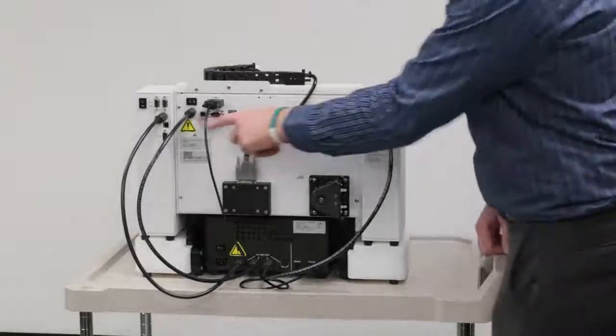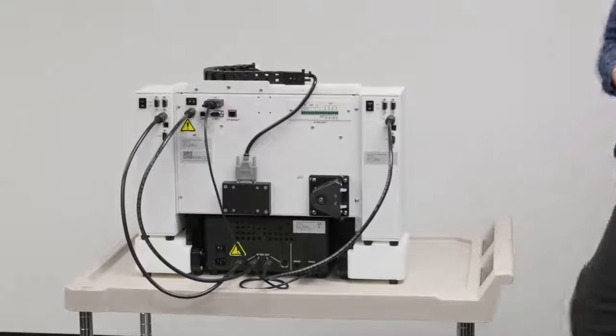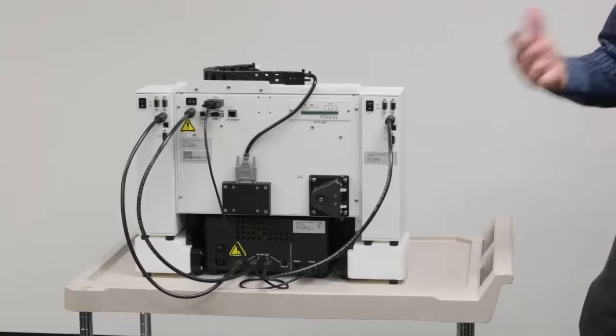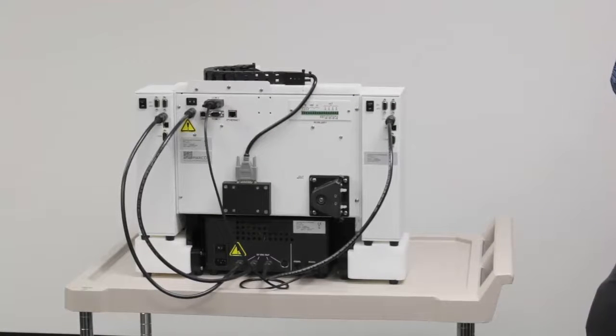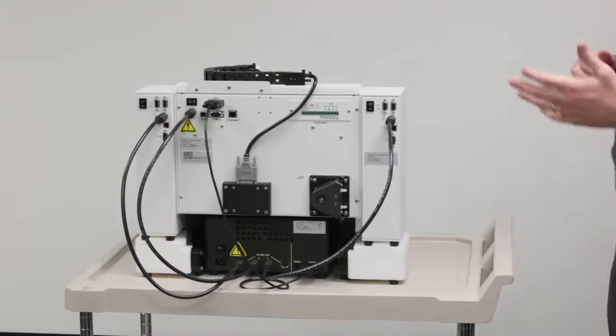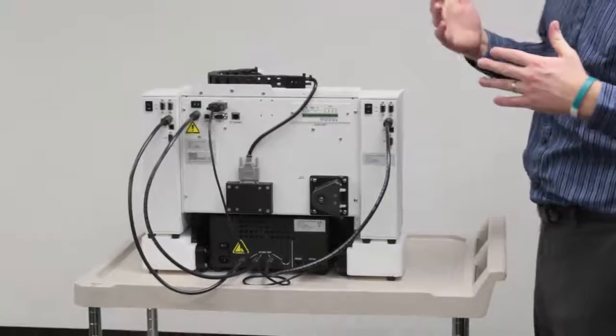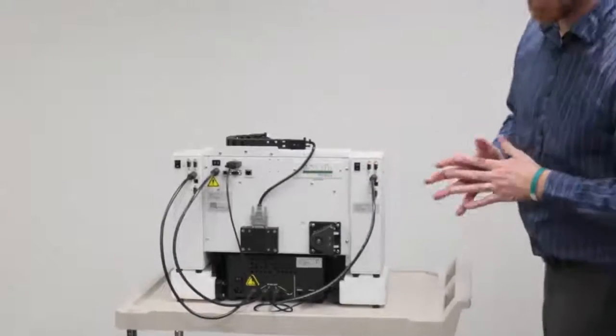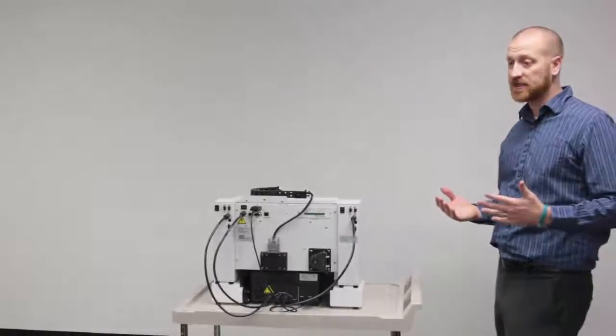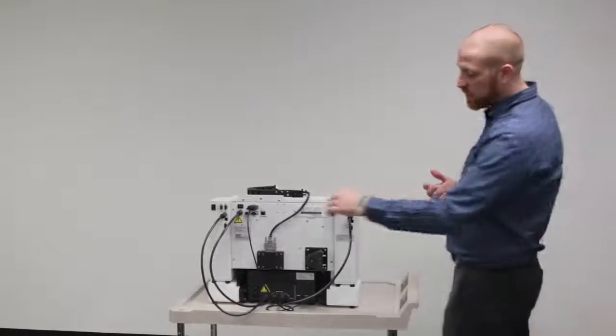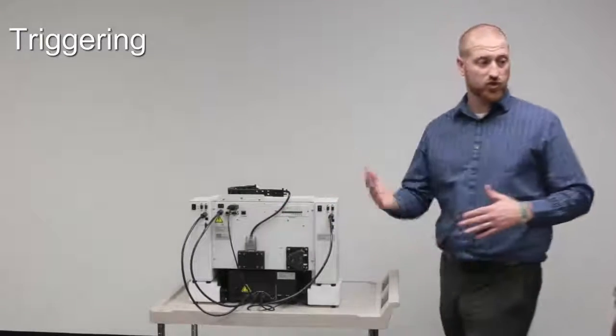So all we actually have plugged in is one power line coming into our automation workstation, and then we have one USB line feeding out to our host computer, which would be the same computer as your ICP-MS. If you're using an automation workstation system without integration into the OEM ICP-MS software, then you also have one connector here for your triggered interface.